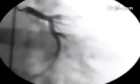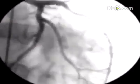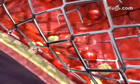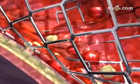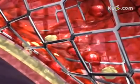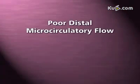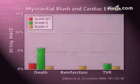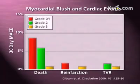Although the angiographic result is quite acceptable, a significant amount of residual thrombus persists, both at the stent edges and adherent to its struts. The poor distal microcirculatory flow, as assessed angiographically by myocardial blush, strongly correlates with poor clinical outcome.